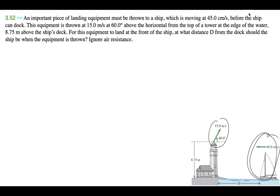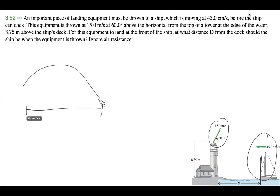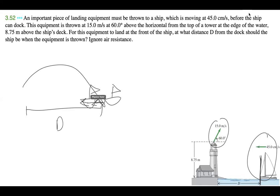So we want the landing equipment to land at the front of the ship — that's this distance d. But this distance d is changing because we have this x motion of the ship. For example, if we had no ship, it would just be this static distance d. But because the ship is moving, this distance d is actually getting smaller as time increases. So if the boat is right over here, at some point it's going to be right over here, and this distance d is getting smaller. We have to take that into account.